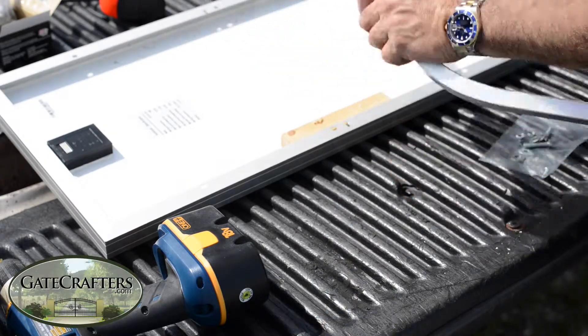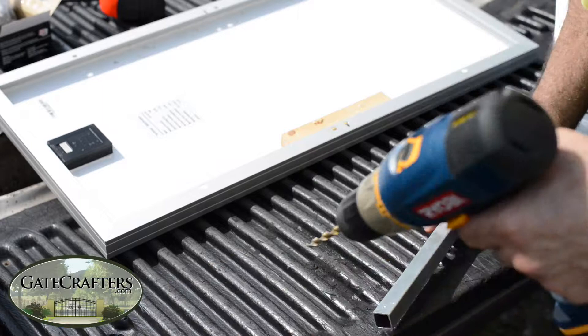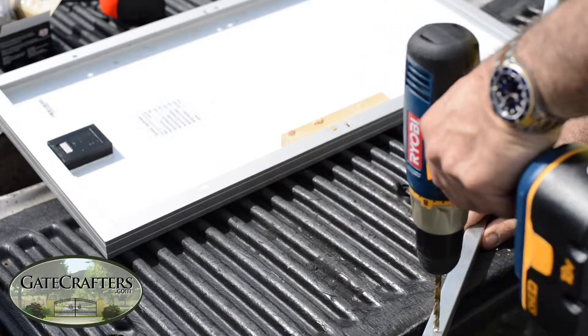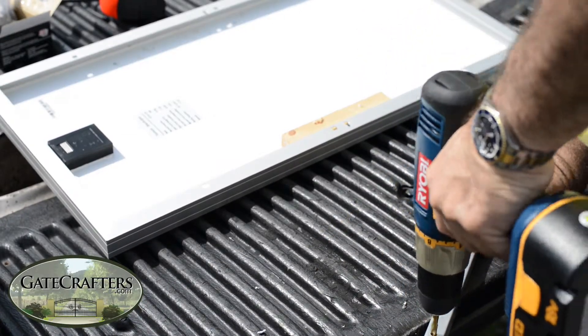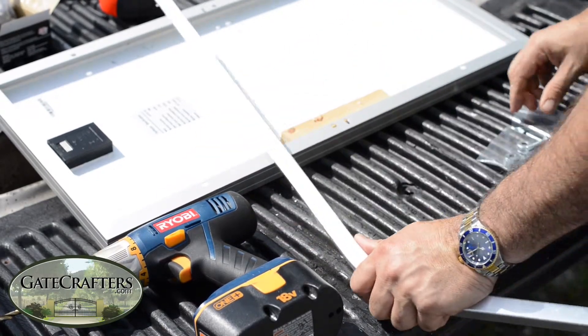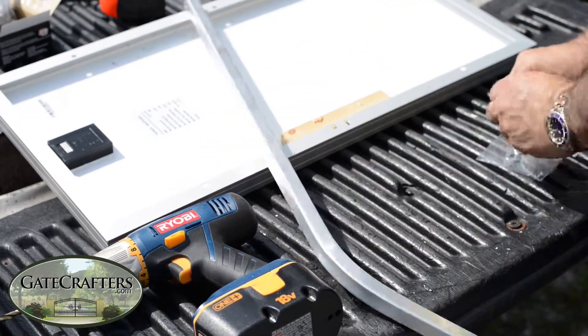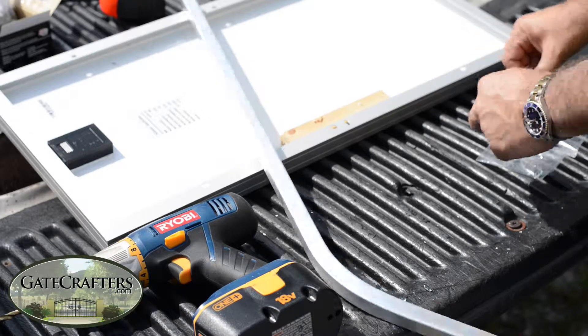First of all, you're going to drill a hole in the top of the bracket. Then I'm going to bolt it to the solar panel because I want to make sure when I drill the second one it's perfect.